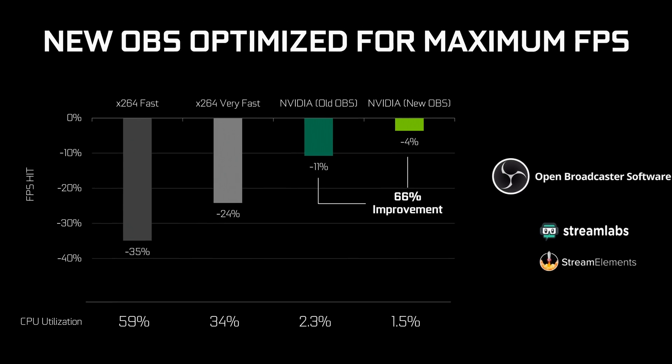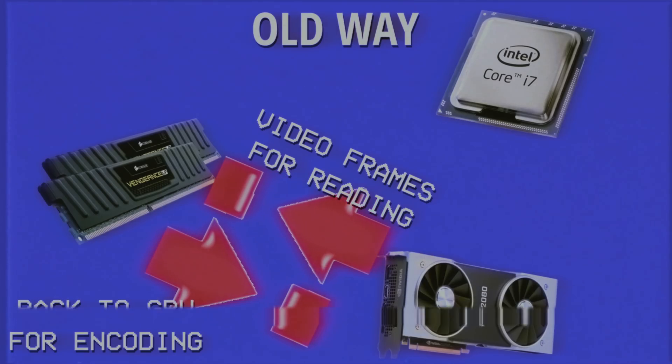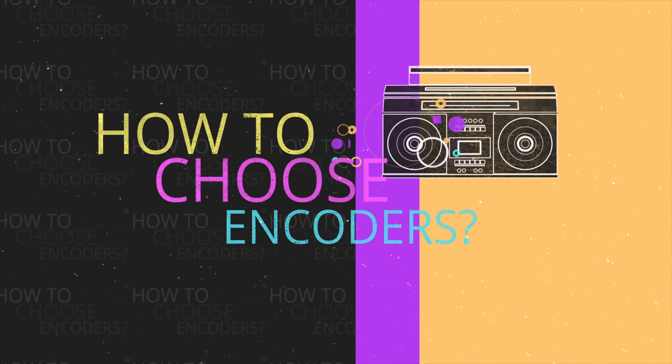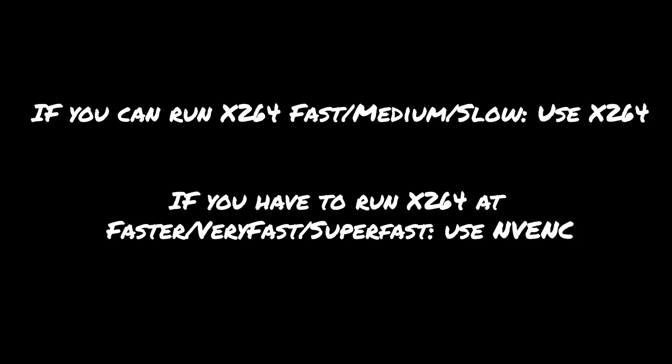OBS 23 has updated their implementation of GPU encoding for NVIDIA hardware, which improves performance quite a bit, and the 20-series graphics cards increase quality even more. My recommendation for how to decide what encoder to use is this: if you can run x264 for your livestream at fast or medium CPU usage preset – typically this would require a dual PC streaming configuration – then you might as well use that. But if you are forced to run it at faster or any higher usage presets for x264, then run NVENC. It'll be better quality and not hurt your system performance as much. For recording, you might as well just always use NVENC anyway.